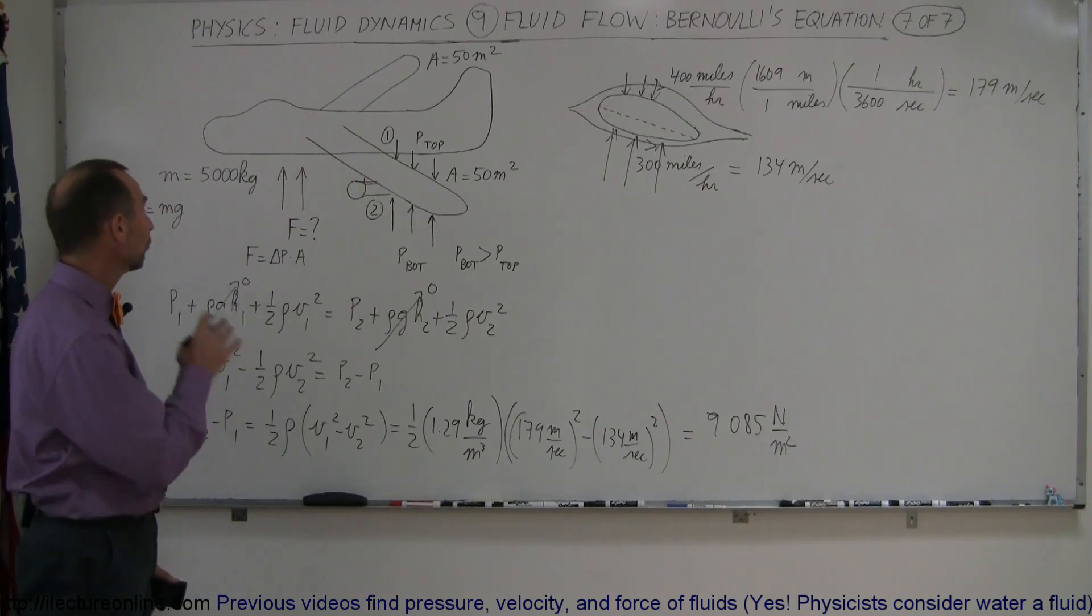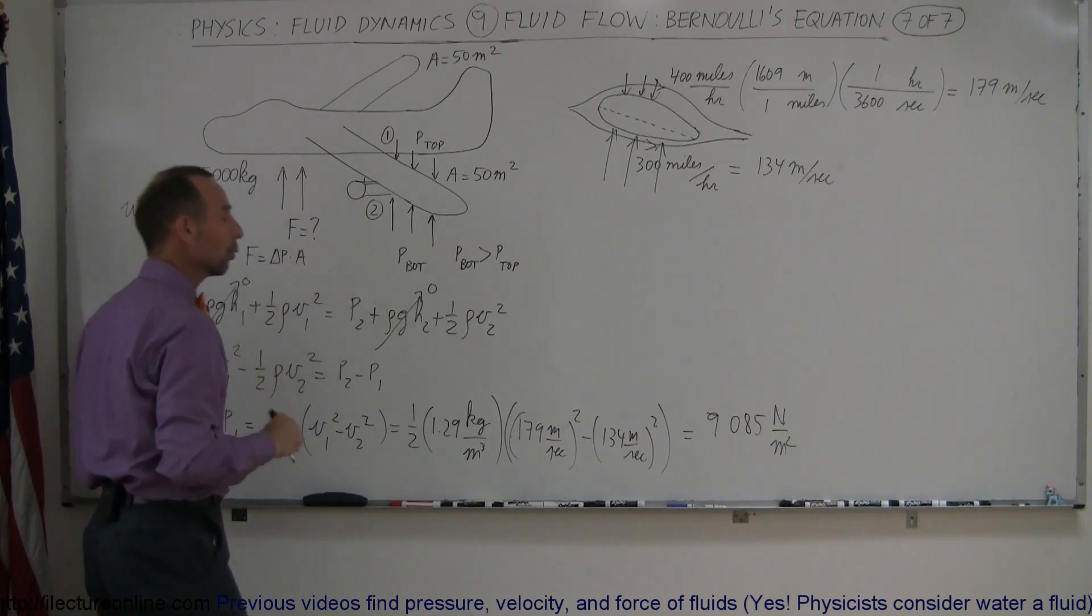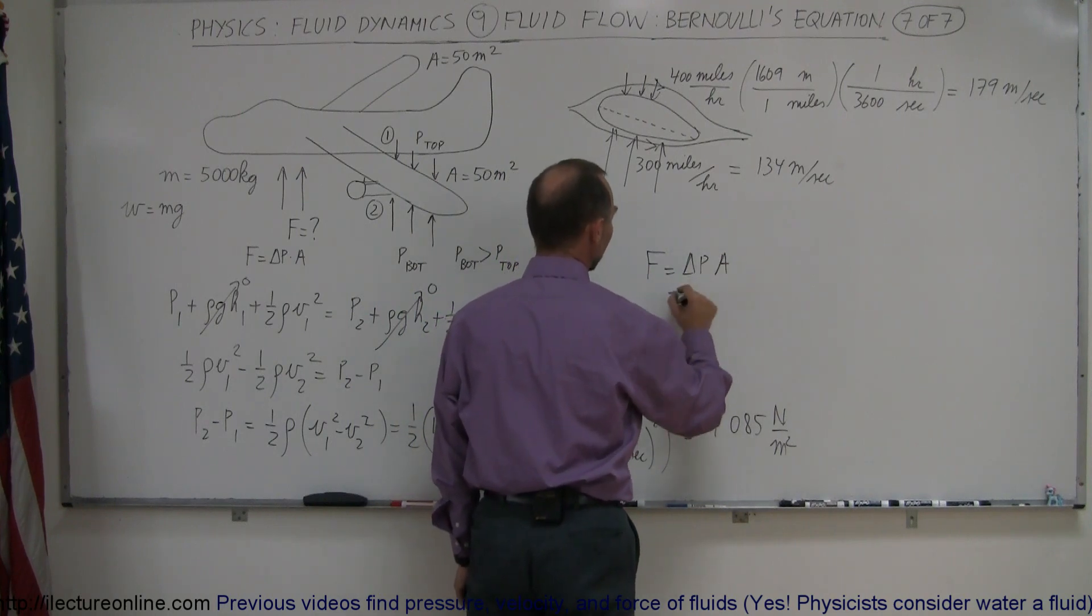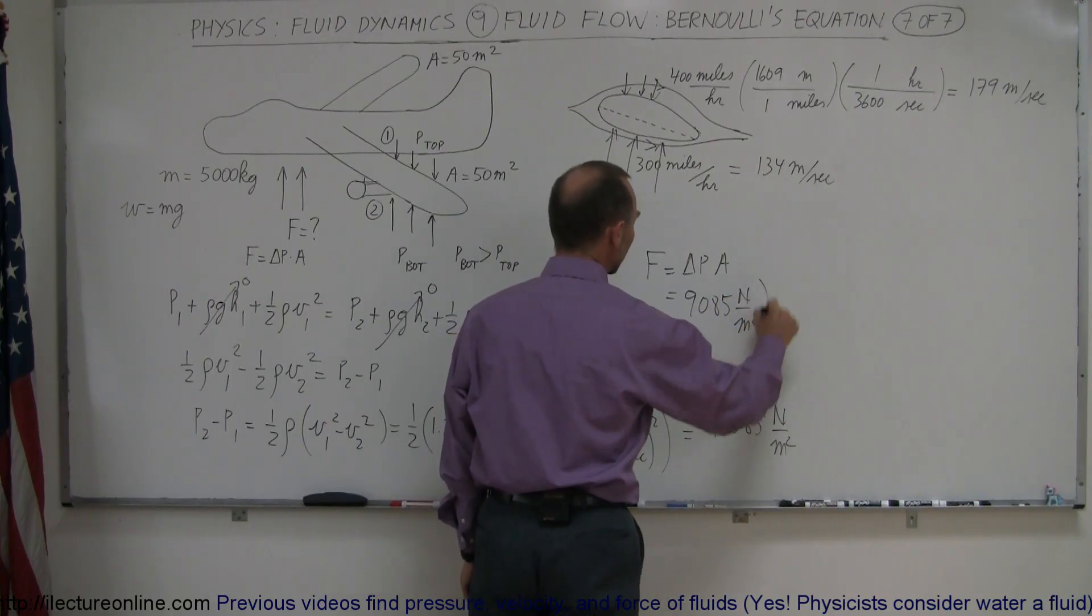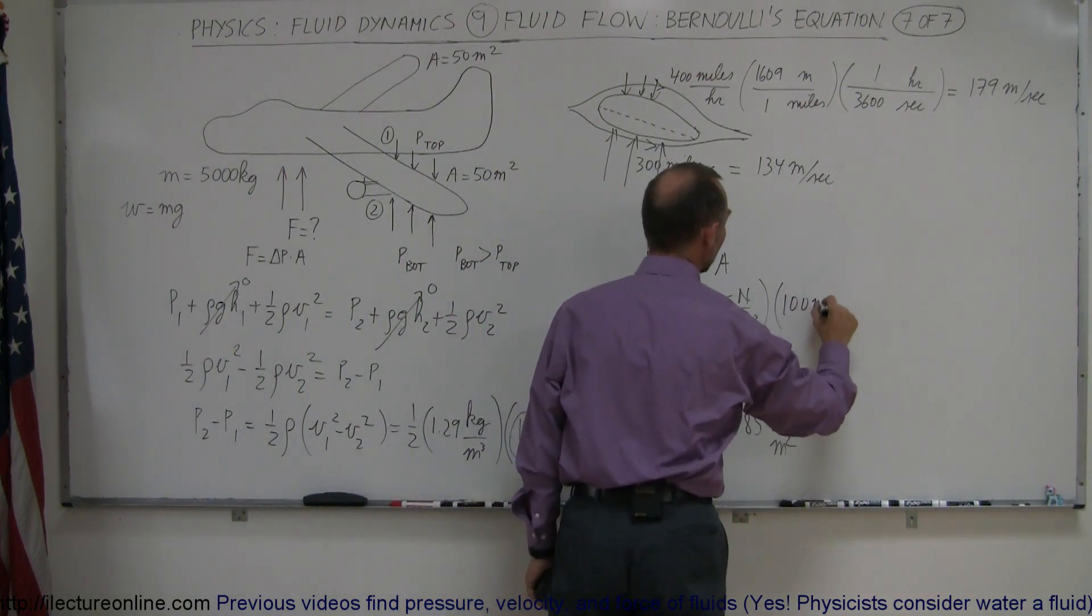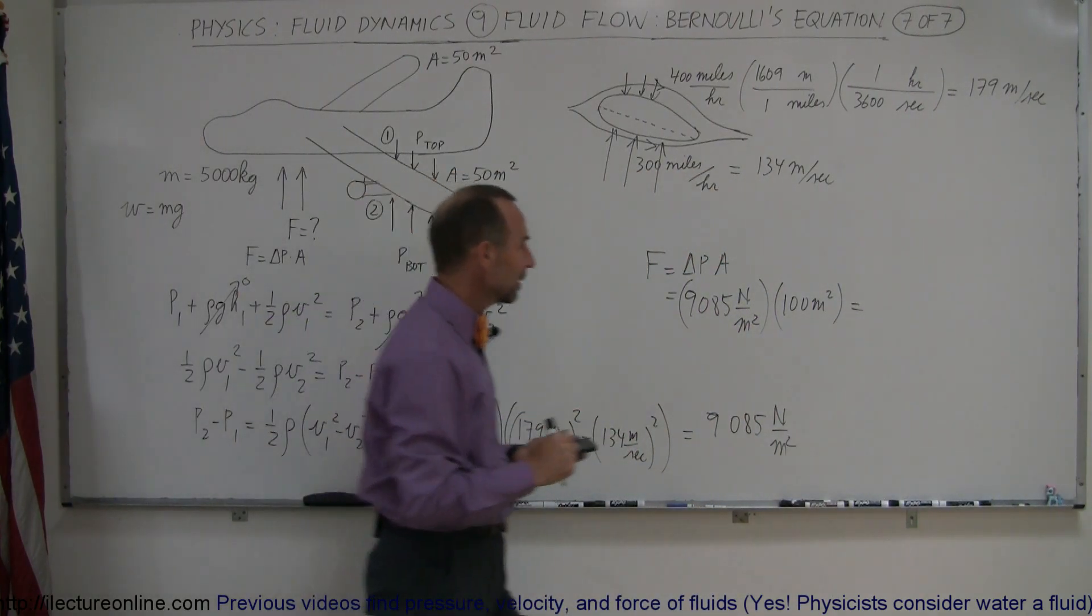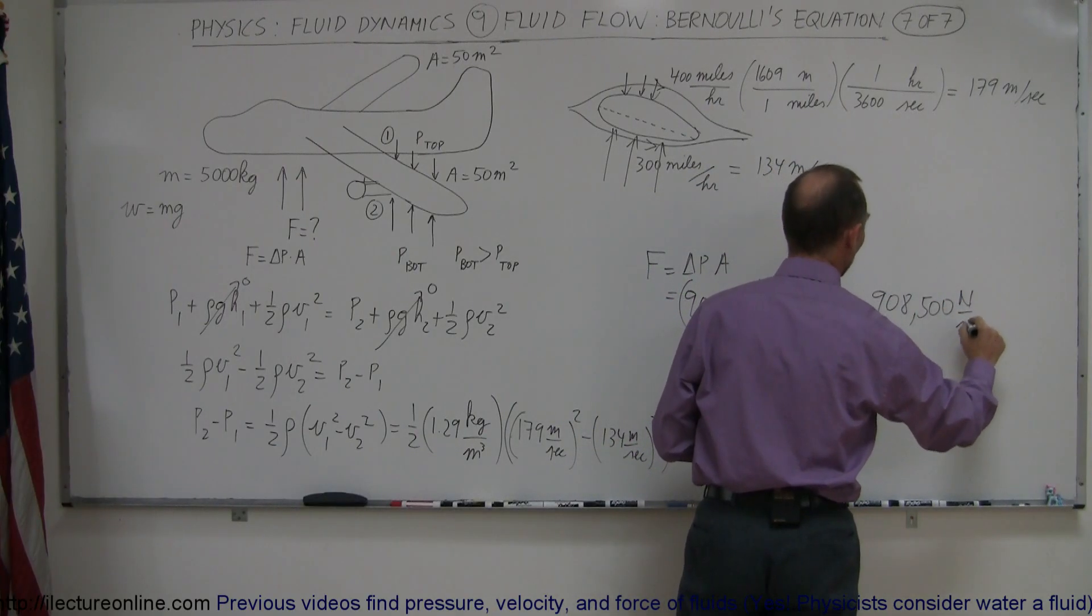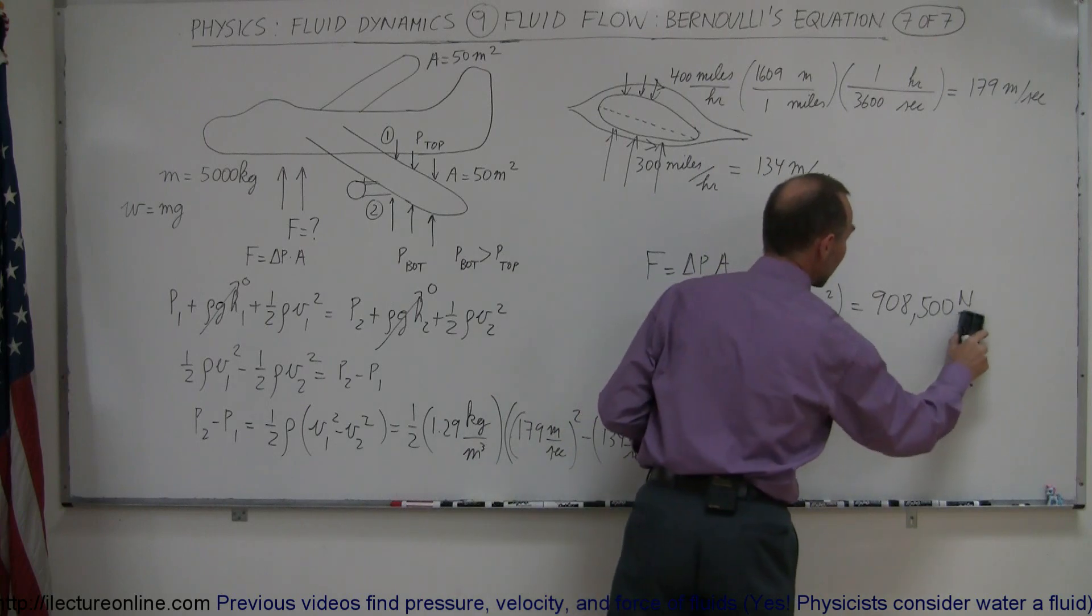Now, what would be the total force? Now, the total force on the plane, pushing the plane up, would be the pressure difference times the area of the wings. So, the force is equal to the change in the pressure, difference in the pressure times the area. The difference in the pressure is 9085 newtons per square meters. Multiply times the area, the area would be 50 plus 50 or 100 square meters, 100 meters squared. And so, what do we get? Hmm, 100 times 9,000, that would be 908,500 newtons per square meter. Oop, no, square meters cancels out. So, simply would be newtons.